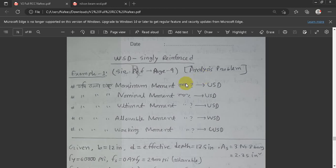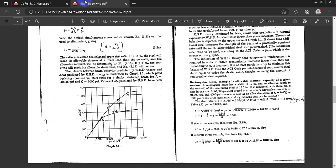What we said about maximum moment is the USD method. What we said about nominal moment is the USD. What we said about ultimate moment is the USD. What we said about allowable moment is the USD. What we said about working moment is the USD. That means allowable and working. We have to solve the USD method.